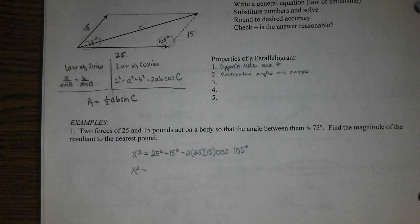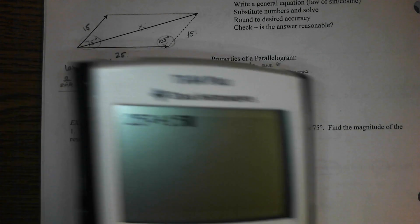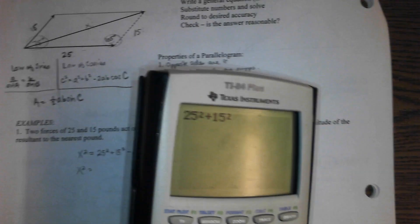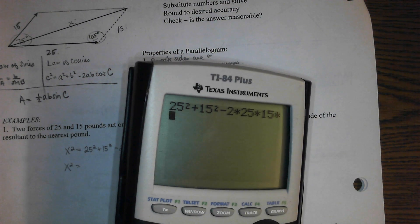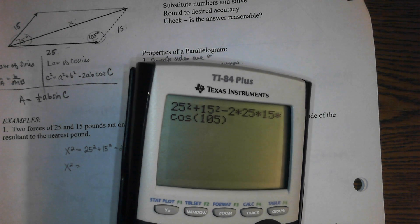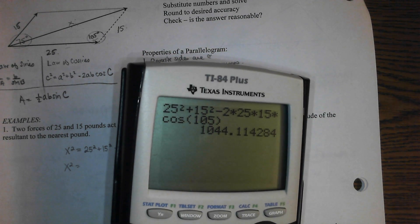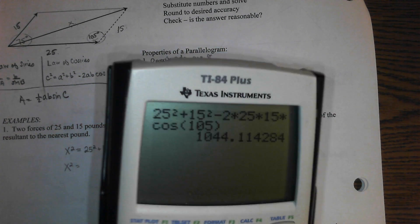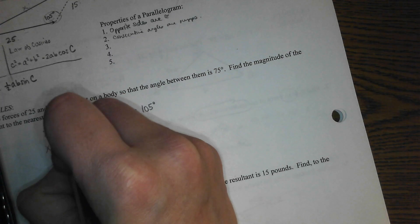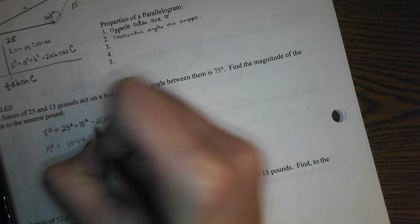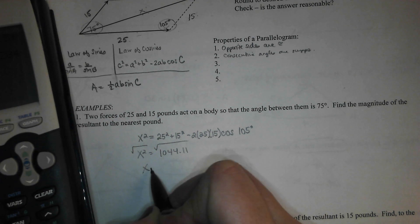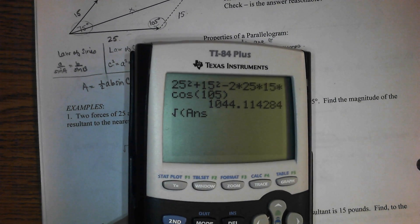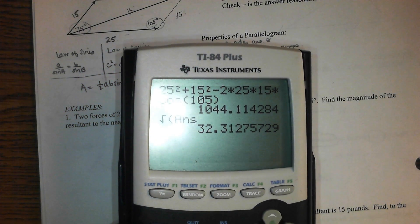25 squared plus 15 squared minus 2 times 25 times 15 times cosine 105. And this gives me x squared, 1044-ish. And then square root both sides. And we get 32.3.